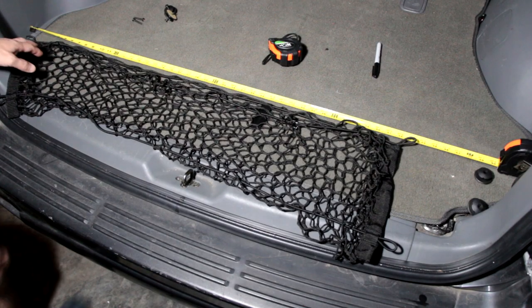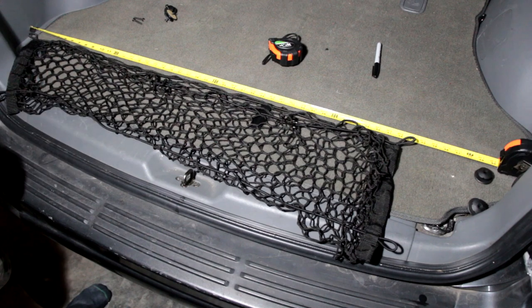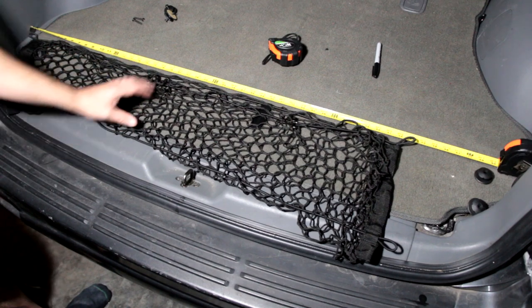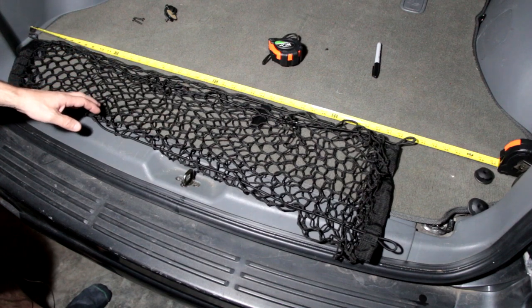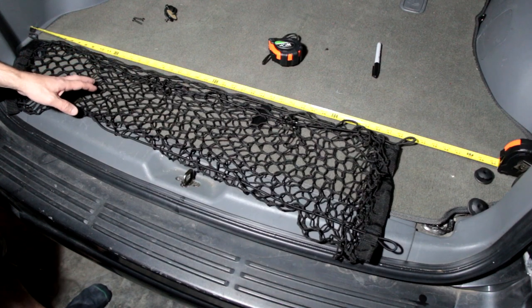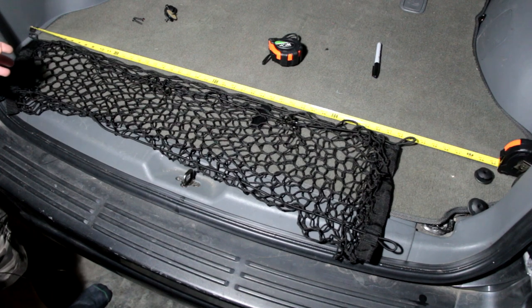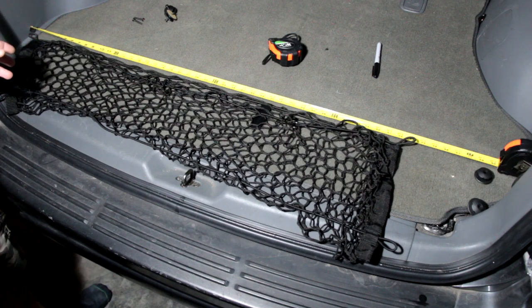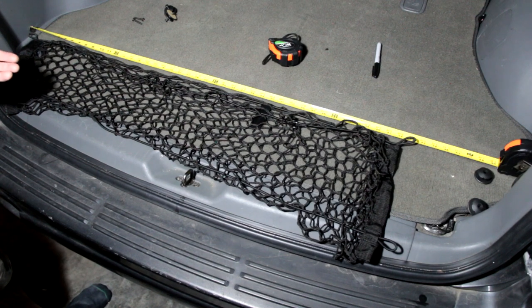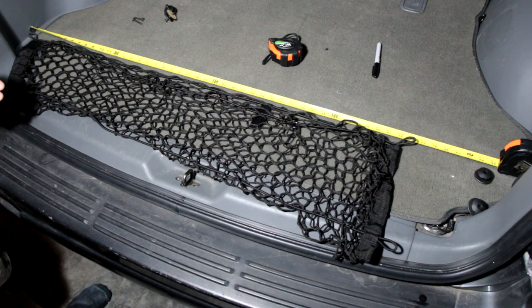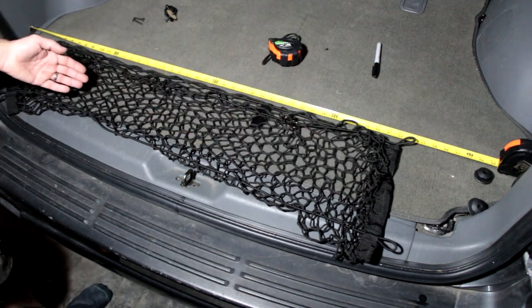I've got the cargo net stretched out here loosely, without any tension on the shock cord on the top or on the bottom. They're both bungee cords that stretch. It's about 43 to 44 inches. That's not really tight enough to hold anything. You'd want it to stretch at least another two inches. So your minimum stretch would be about 46 inches. You need a span across here that would be about 46 inches minimum.